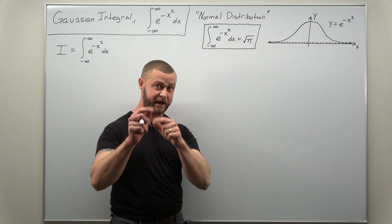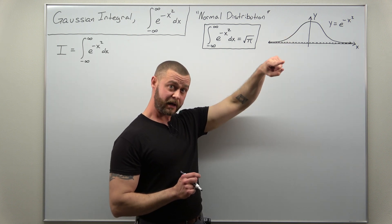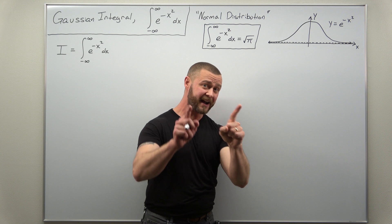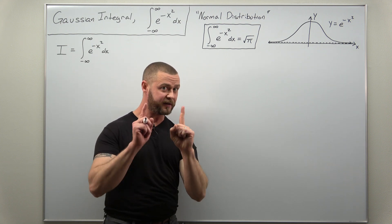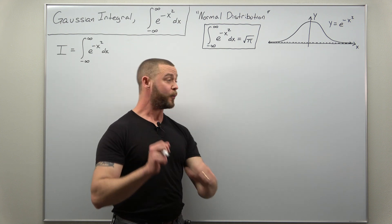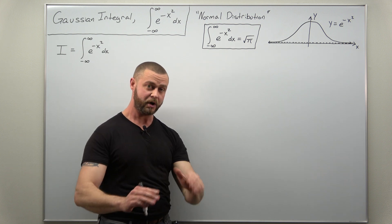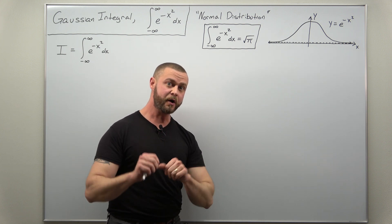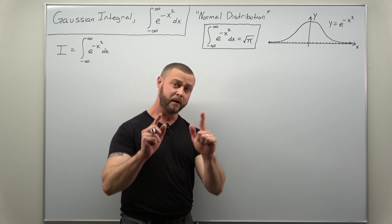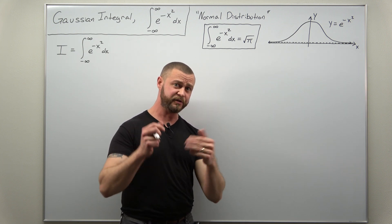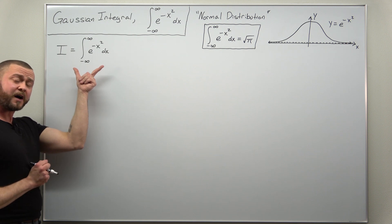Here we have a simple graph of y equals e to the negative x squared. If you were to calculate the area beneath that graph and above the x-axis over the entire x-axis from negative infinity to infinity, you get square root of pi. We're going to show by evaluating the Gaussian integral that we get square root of pi as our answer. This video is all about how we evaluate the Gaussian integral using the simplest technique available, which is converting to a double integral and using polar coordinates.